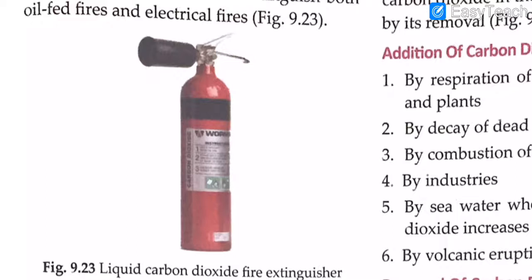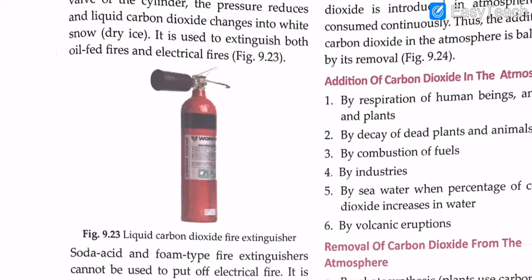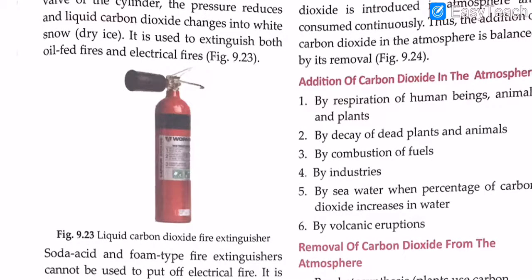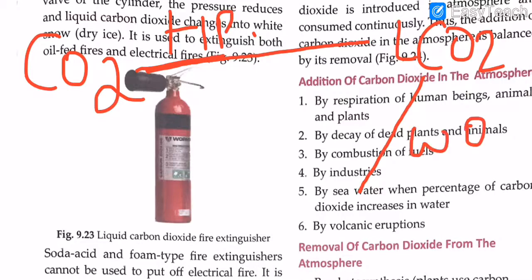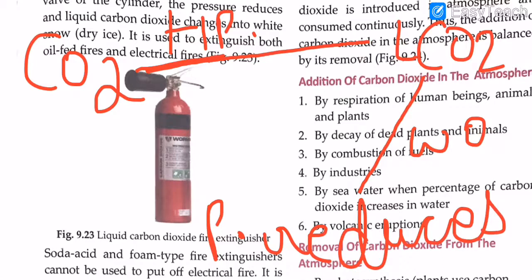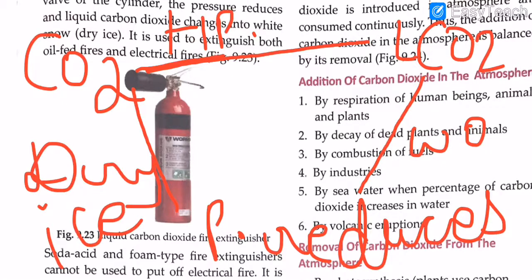To summarize the liquid CO2 extinguisher: CO2 under high pressure changes into liquid CO2. When the valve is opened, pressure reduces, and the liquid CO2 changes into dry ice. This extinguisher is used to extinguish both oil-fed fires and electrical fires.